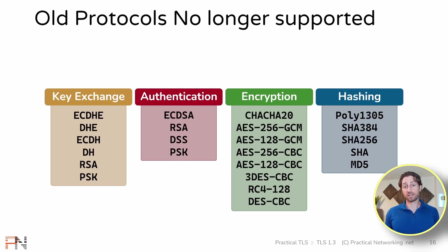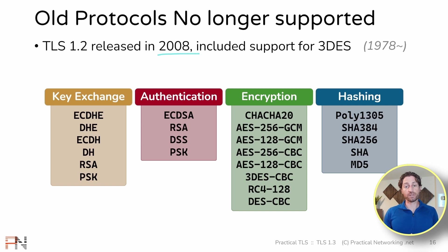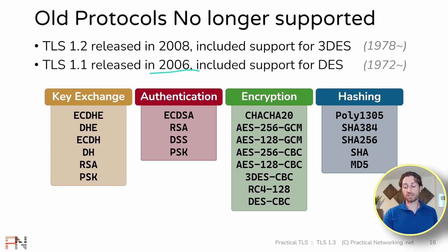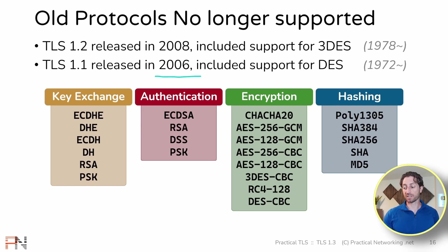To give you some context for that, TLS 1.2 was released in 2008, and in 2008, TLS 1.2 decided to support TripleDES. TripleDES is a symmetric encryption protocol that was created in 1978, and when TLS 1.2 was released, TripleDES was already under question as to how secure it actually is. Moreover, in 2006, TLS 1.1 was released, and TLS 1.1 included support for DES, which was created in 1972. In 2006, DES was already known to be completely insecure, but for the sake of backwards compatibility, TLS 1.1 included support for DES.